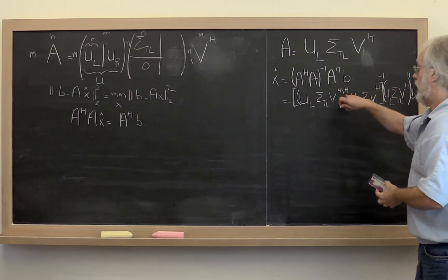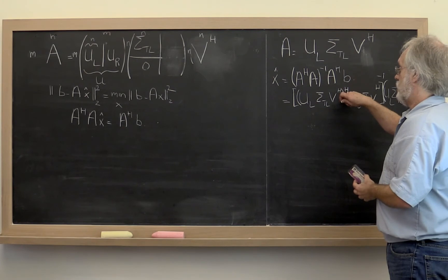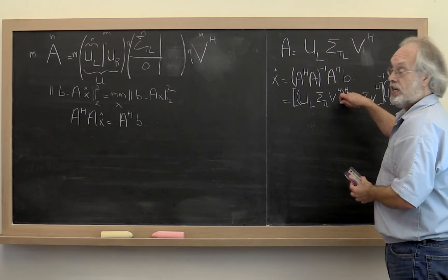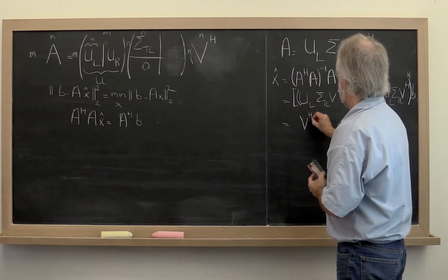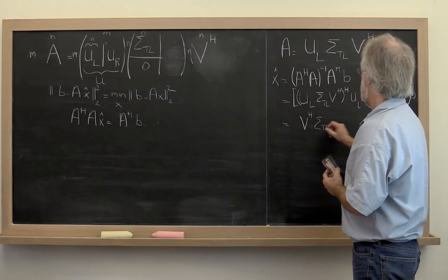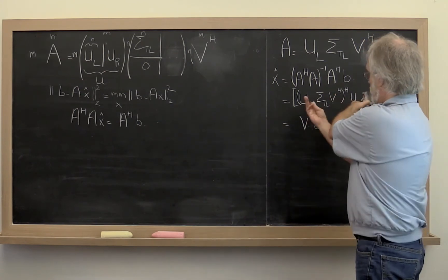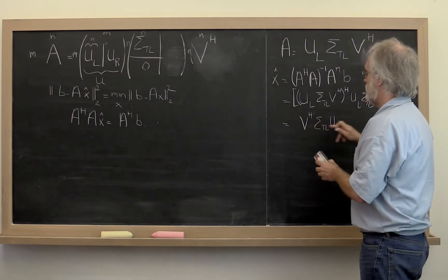What do we know happens when we take the product of matrices and we take the Hermitian transpose of that? Well, that's the same as reordering the matrices, reversing the order, and taking the Hermitian transpose of each part.